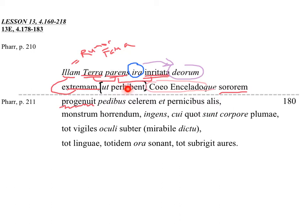Parent Earth, as they say, enraged in her anger at the gods, gave birth to that one last, the sister of Coeus and Enceladus.